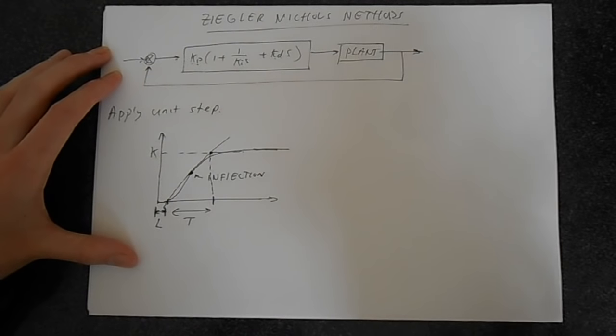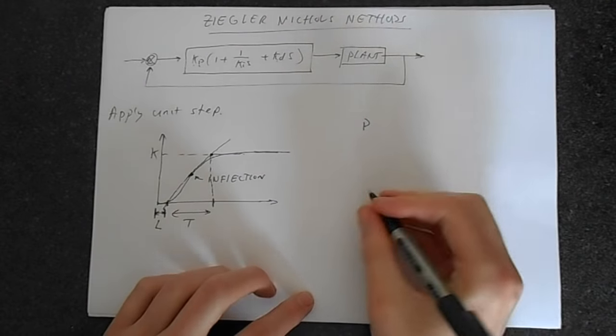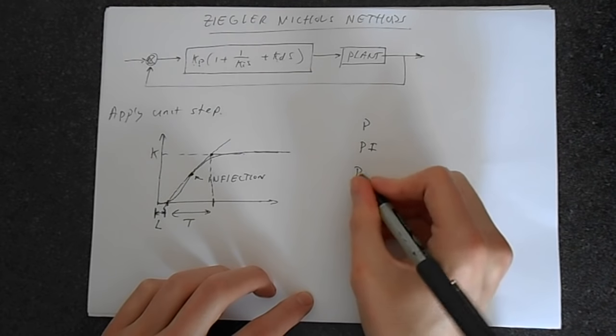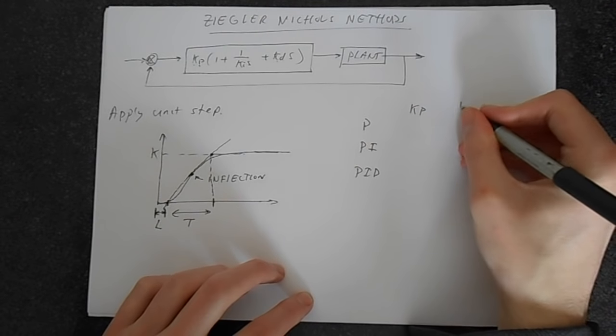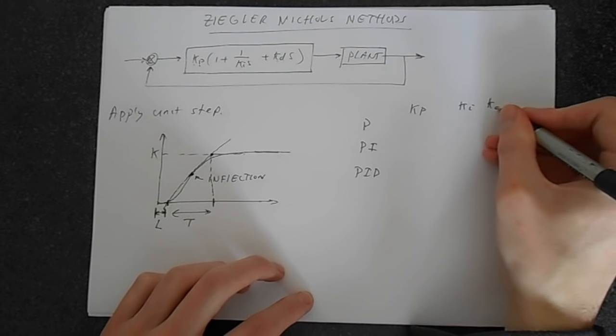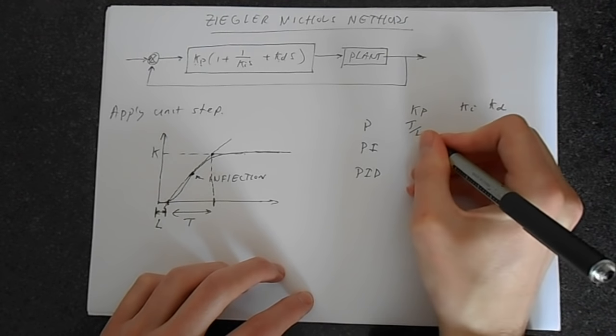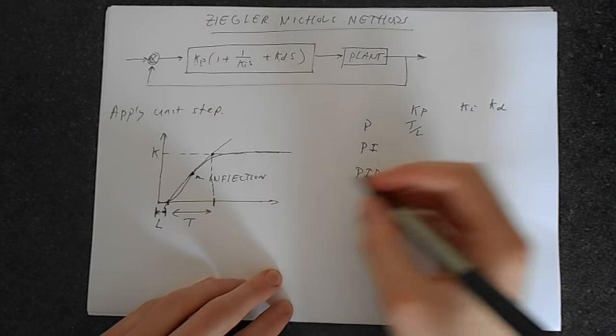And we can make up a table from this of what values we should have. So we've got a proportional controller, proportional and integral controller, and then a PID controller. And then you've got values KP, KI, and KD. So this should be T divided by L. You can determine these. By now, you've got enough mathematics to easily determine these.